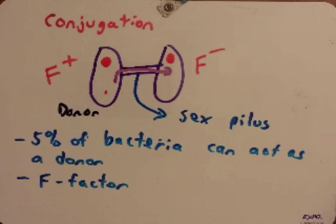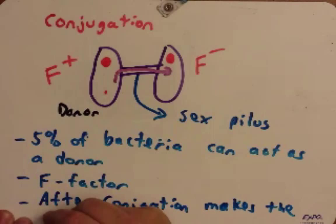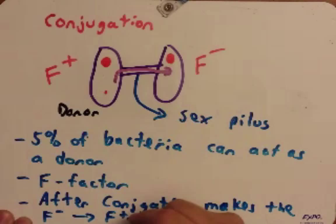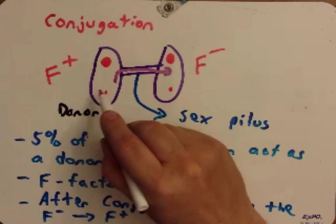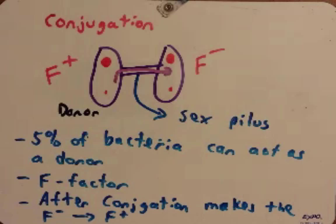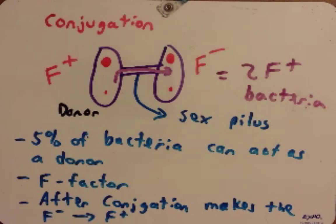One other point: after conjugation, the F-minus cell — the recipient cell — now becomes an F-plus cell. That is because the DNA transferred from the donor to the F-minus cell is the F factor. The donor doesn't lose it; it copies it, and as it's copying it, it sends it over to the recipient cell. So one F-plus and one F-minus cell results in two F-plus cells. Not all bacteria do this the exact same way, but this is a general trend seen in most bacteria.